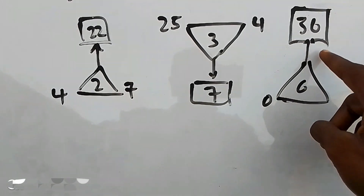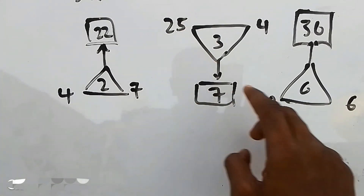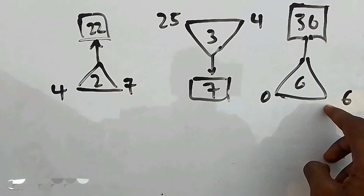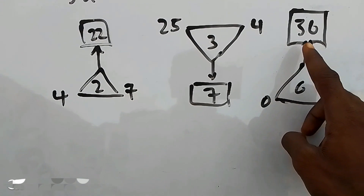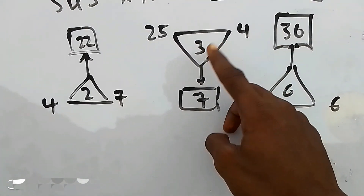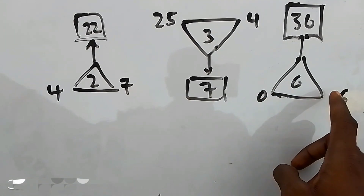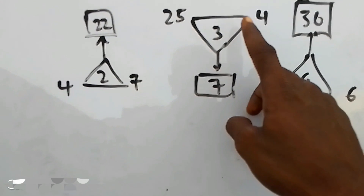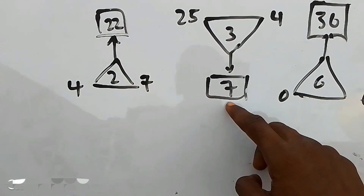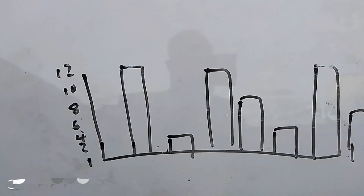Then this one is the same thing, just following up. So this plus this: 6 times 6 is 36. But opposite of it — so instead of doing that, you first minus, then divide. Opposite of times. Then you have the answer there.